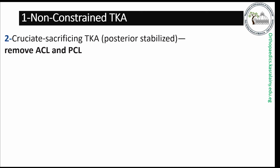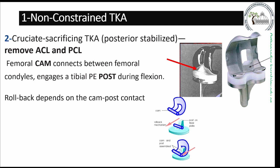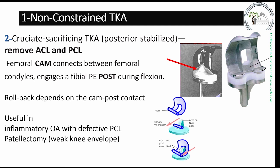In the posterior stabilized design, both the ACL and PCL are removed. A femoral cam connecting both femoral condyles engages a tibial polyethylene post during flexion, and the rollback mechanism depends on cam-and-post contact. It can be used in inflammatory arthritis such as rheumatoid arthritis with a defective PCL, and also in post-patellectomy cases where the knee extensor mechanism is weak.